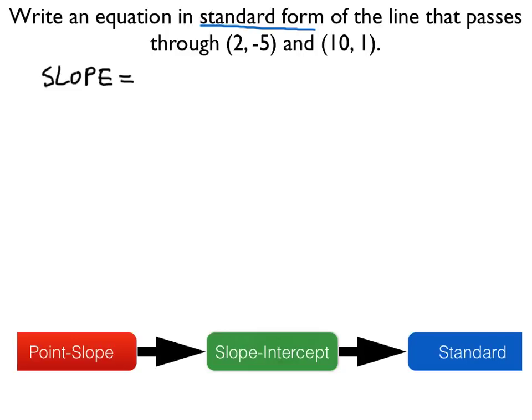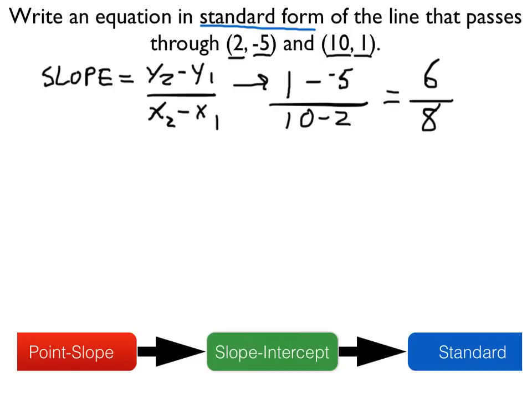Do you remember the slope formula? If not, you should test yourself. Make sure you do memorize that. That's an important formula to know. So let's take one minus negative five and we'll divide that by ten minus two. So we have six eighths, which of course simplifies to three-fourths.